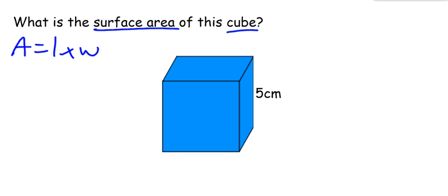If I find the area of each side, in this case my cube, I need to find the area of this side which is a square. Cubes all have the same length of edges, so five times five gives me twenty-five centimeters squared.